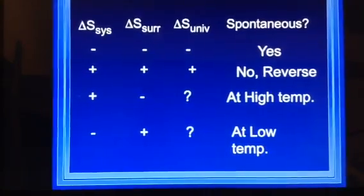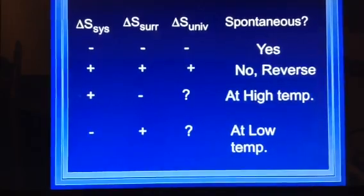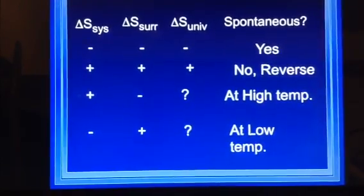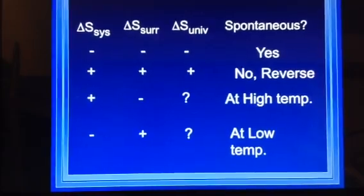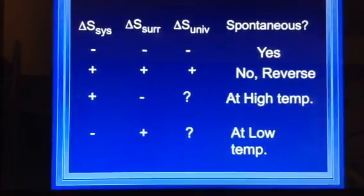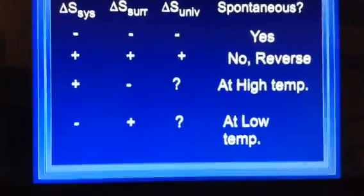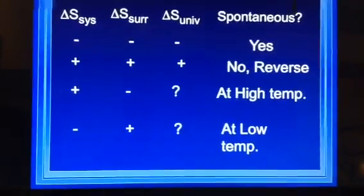At a very high temperature, if the system is positive, the surrounding is negative, then it will be spontaneous at a high temperature. The universe is a little more dependent there. If the system is negative, the surrounding is positive, at a low temperature, it will be spontaneous. Again, it depends, the universe is a little more dependent.